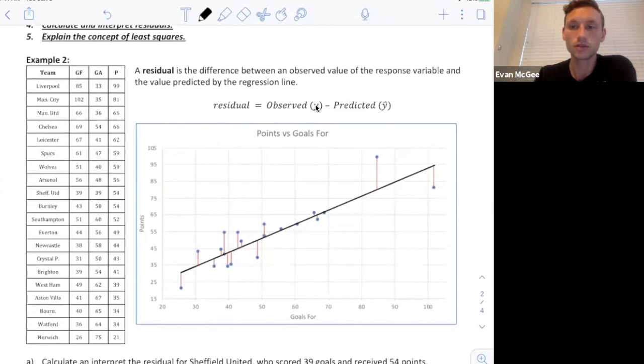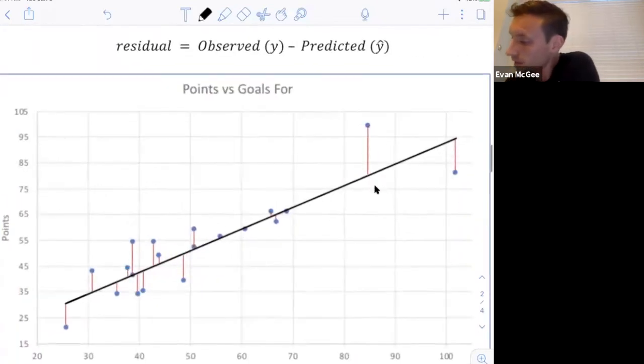Their observed value would be 99 points. Their predicted value, we'd have to figure it out by plugging in 85. How many points will we expect a team to score if they scored 85 goals? It's going to be wherever this line is. It looks like it'll be about 70, 80 points.